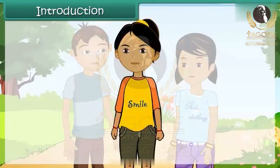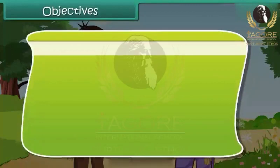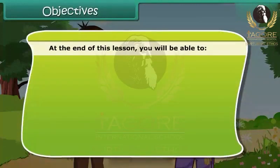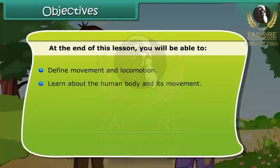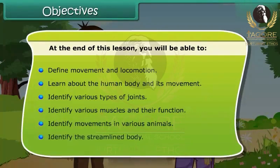Children, in this lesson we will learn about body movement and the difference between movement and locomotion. At the end of this lesson, you will be able to: define movement and locomotion, learn about the human body and its movement, identify various types of joints, identify various muscles and their functions, identify movements in various animals, and identify the streamlined body.